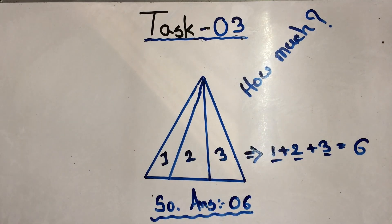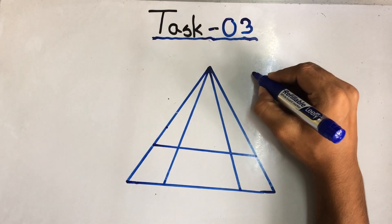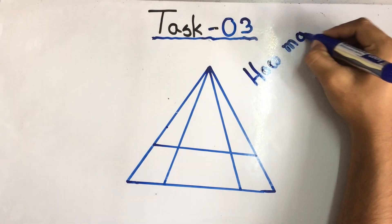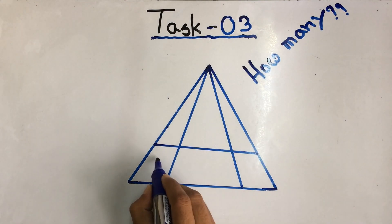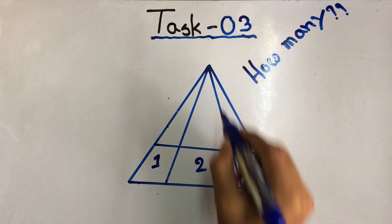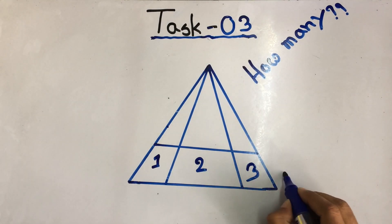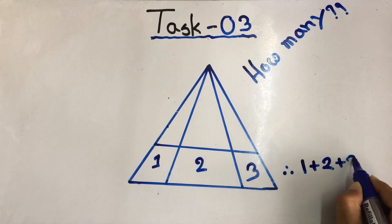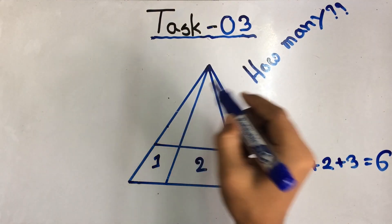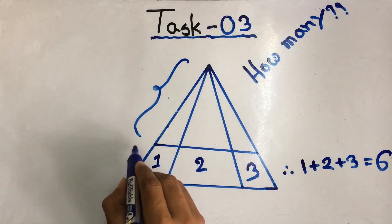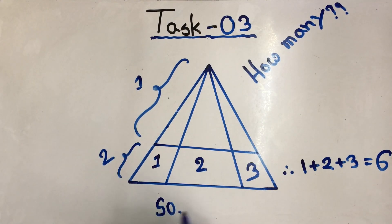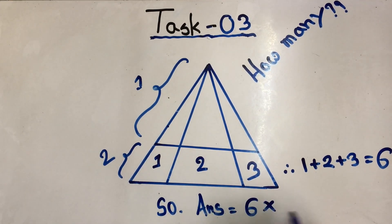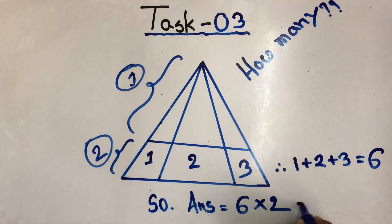Now come up with the secondary task, task number two. It's something different because there is also a divider segment — a new line crossing the two lines. Same as before, first measure how many segments there are, then how many dividers in the triangle. We get one plus two plus three equals six, and there are two dividers. So six times two equals twelve.